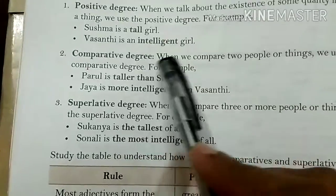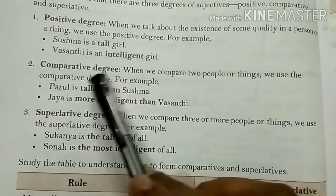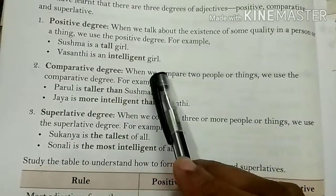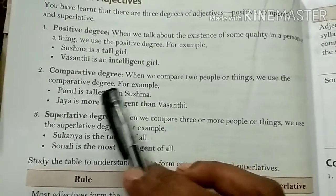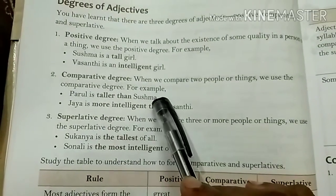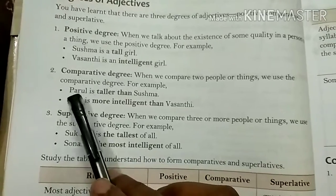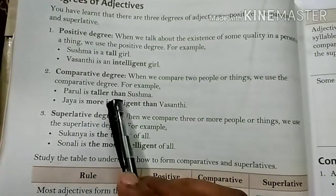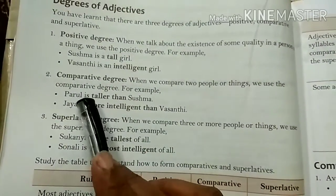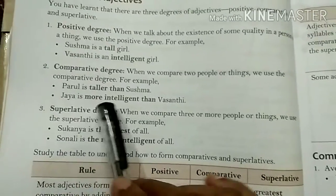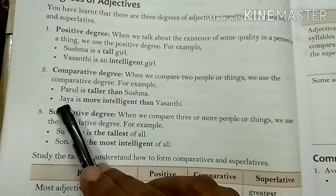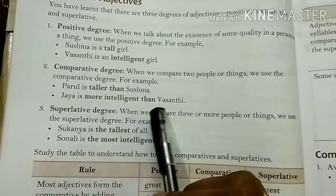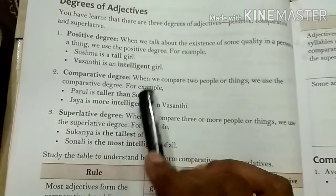Comparative degree: when we compare the quality of two people or things, that is called comparative degree. For example, 'Parul is taller than Shushma' — here two persons are being compared. Similarly, 'Jaya is more intelligent than Vashranti' — comparison is happening between two nouns. This is comparative degree.